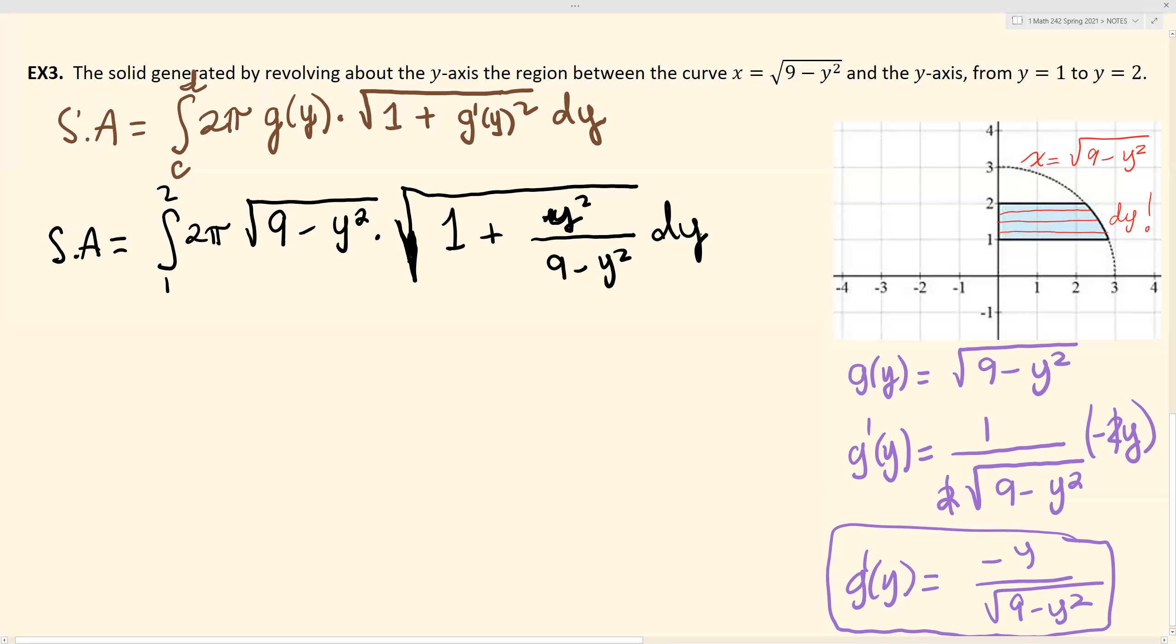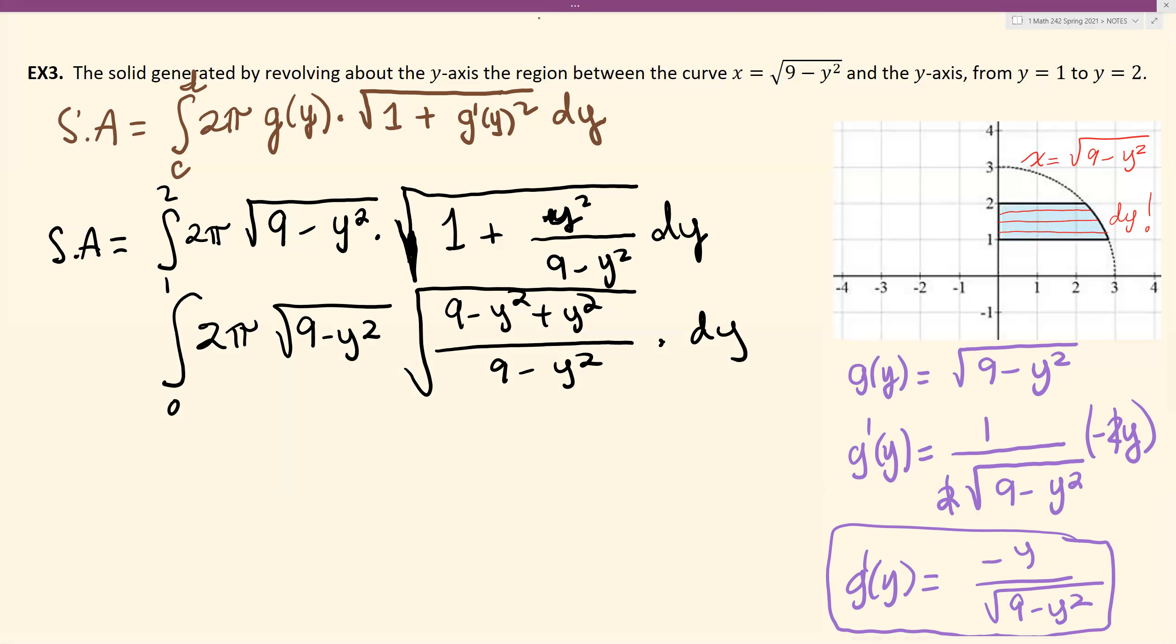All right. So a common denominator here—that's the trick that you probably have seen in the last problem. Common denominator is 9 minus y squared. And so I have here 9 minus y squared plus y squared, dy. That is inside the square root. I still have square root of 9 minus y squared here. I still have 2π here, and I am still integrating from 1 to 2.